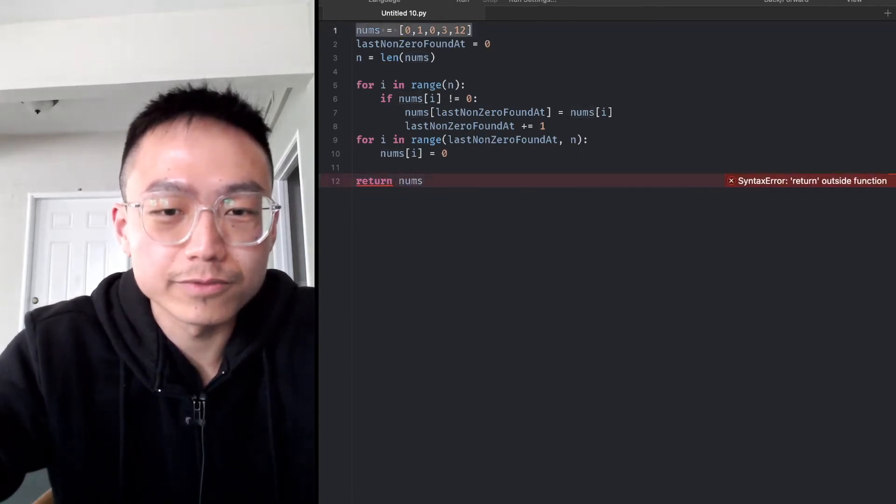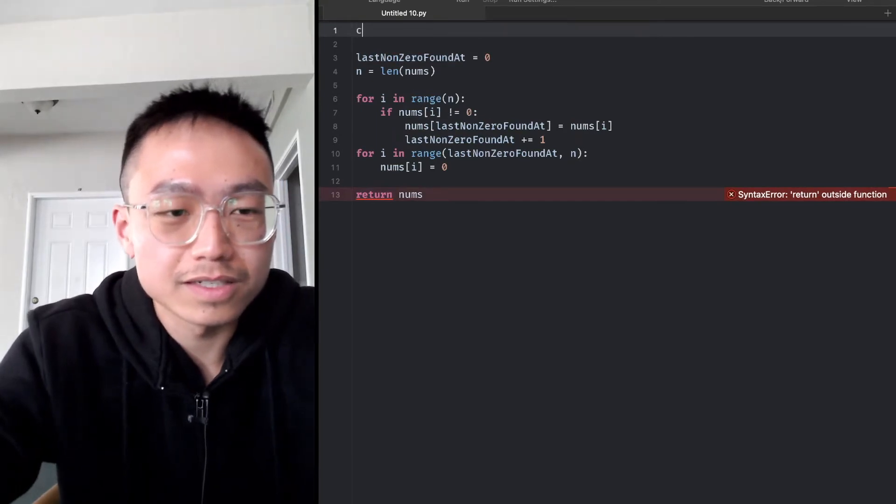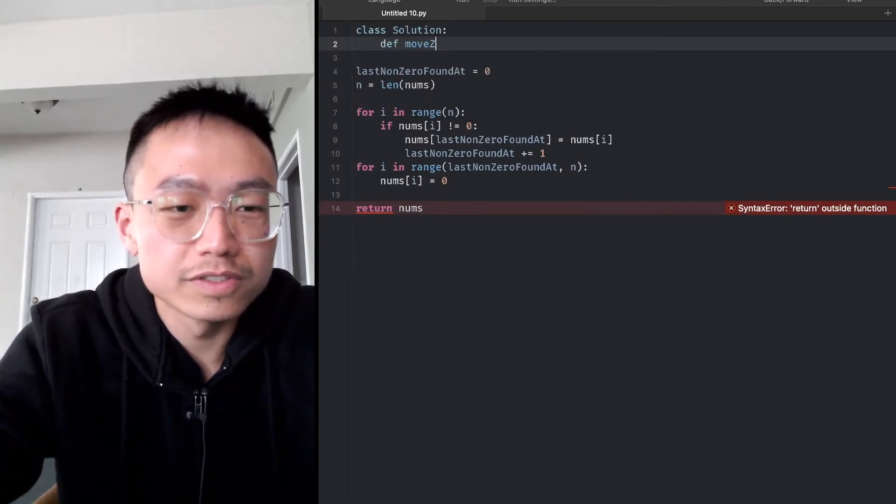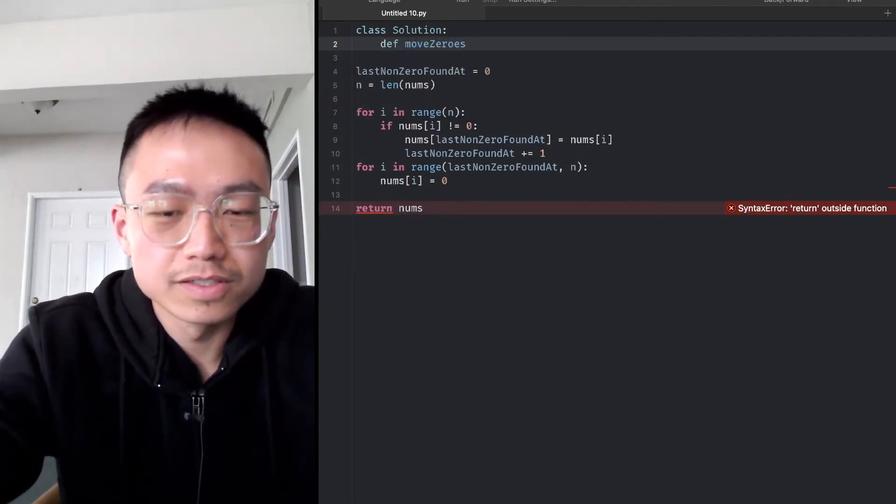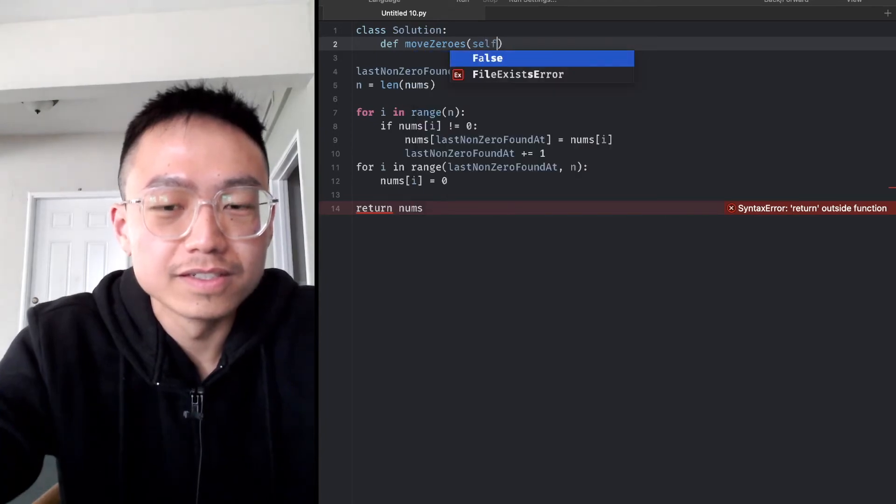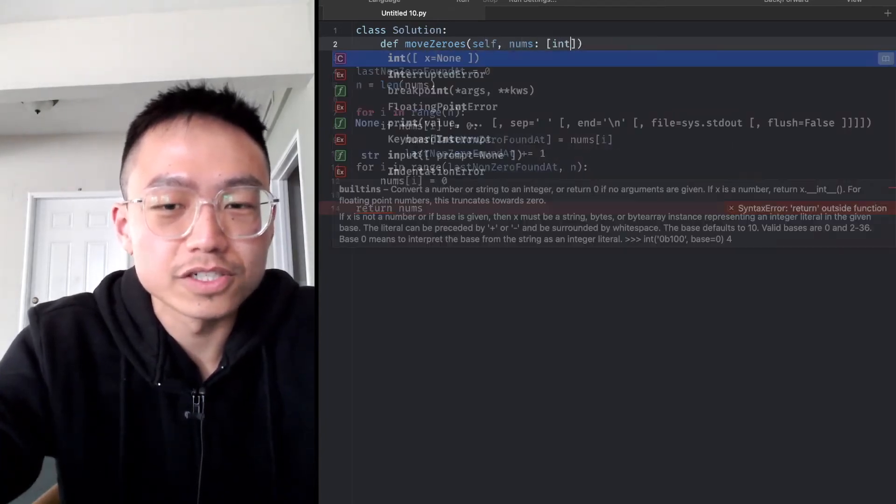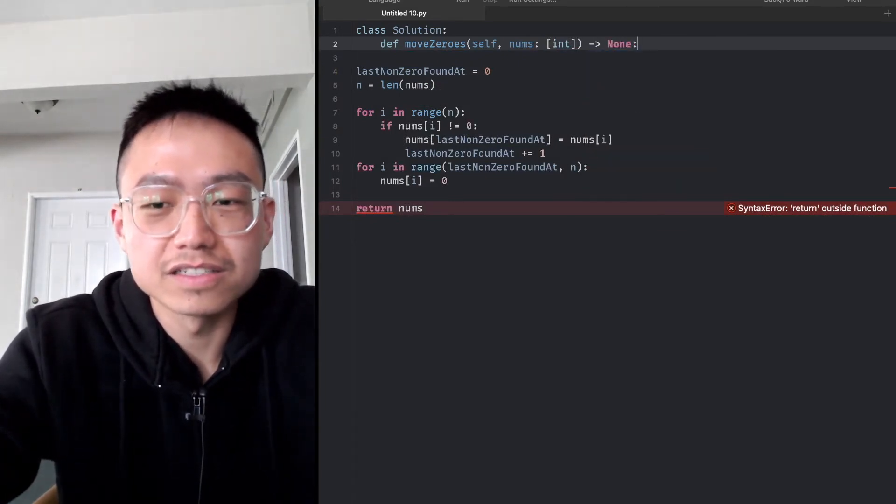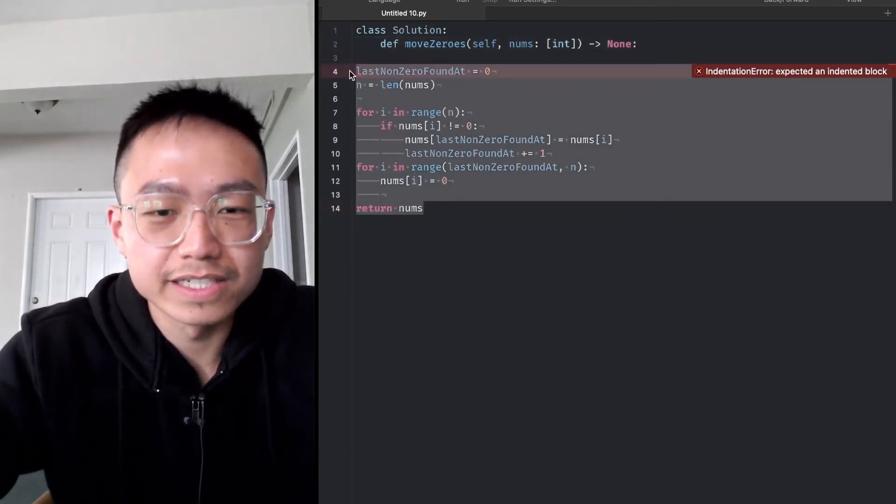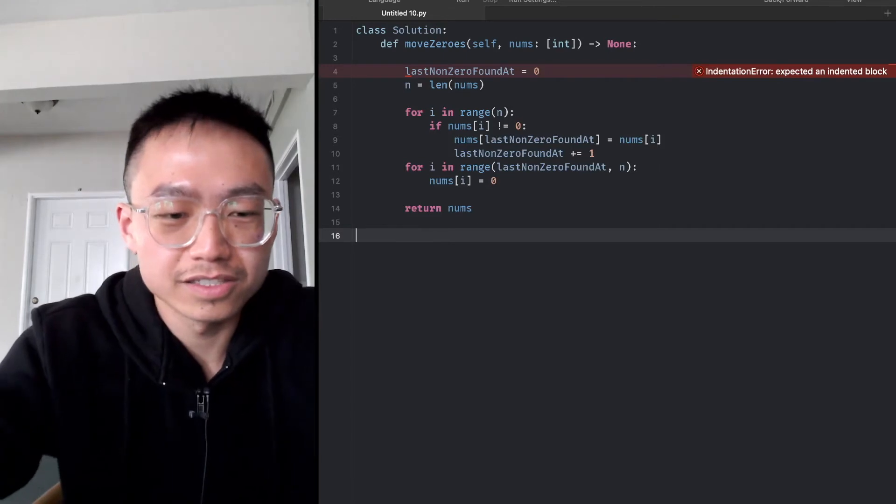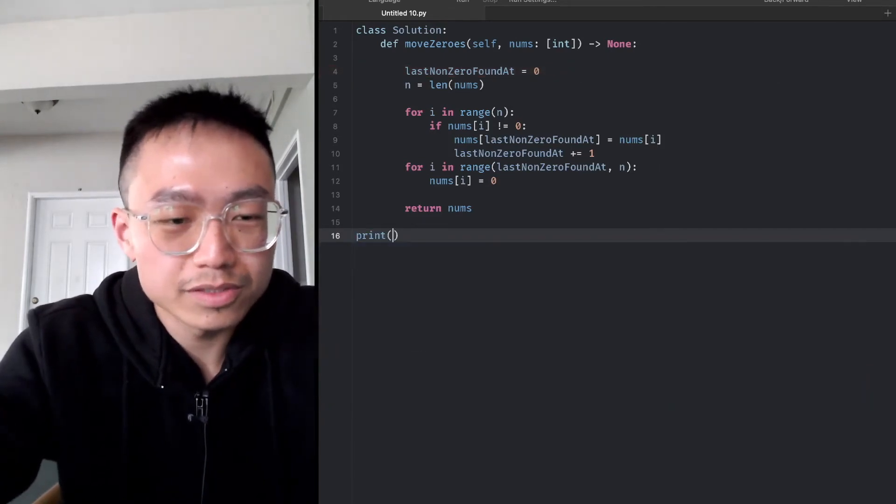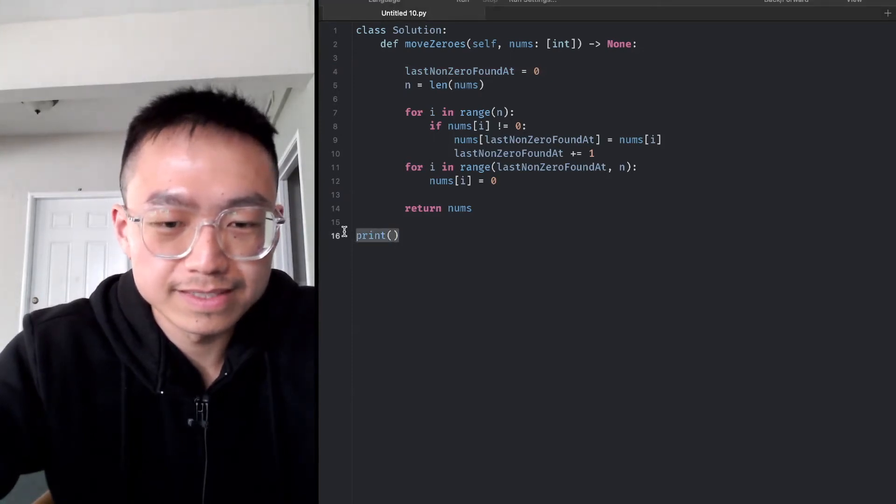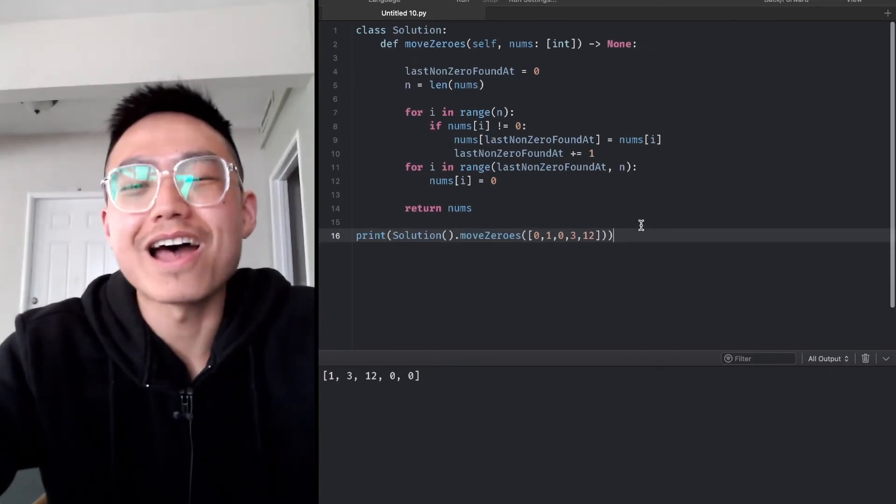Don't forget to class solution, define moveZeroes, self, nums integer list, give them indentation, and print. Yeah, that is how it works.